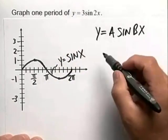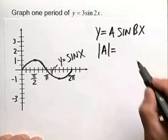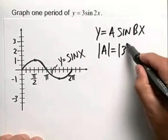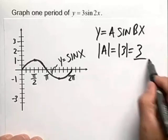We know that our amplitude is equal to the absolute value of a, so for our purposes the absolute value of 3 is equal to 3, so that is our amplitude.